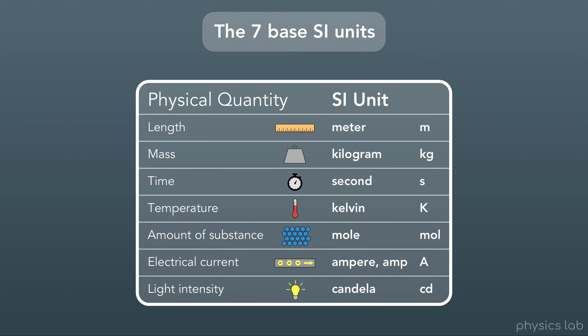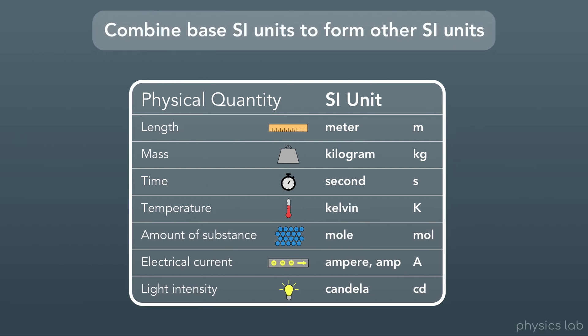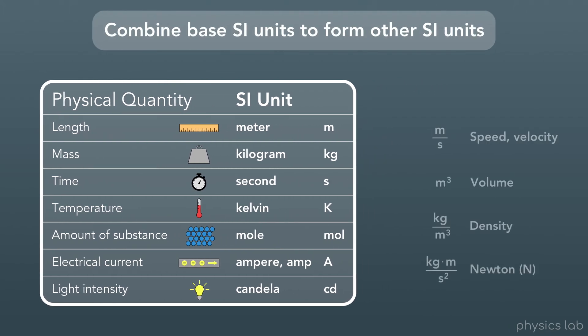So these are the base units, and just like we mentioned before, you can combine these base SI units to form other SI units. For example, the SI unit for speed, or velocity, is meters per second, combining the units for length and time. The SI unit for volume is cubic meters. For density, it's kilograms per cubic meter. And for newtons, which is the SI unit for force, we use kilogram meters per second squared.